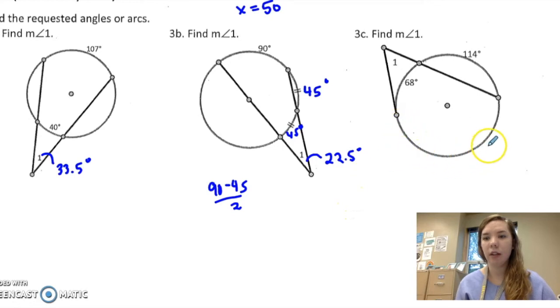Okay, for this one I need to find this arc first, which I can do by taking 360 minus 68 and 114, so it's 178 for this piece